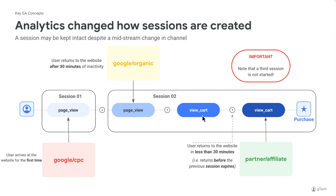Now they have a page view, they view their cart, and then they go out to another website and pick up some sort of partner or affiliate UTMs, likely via a coupon code. They then return to the site to view their cart and complete the purchase. Note that going out to another website and picking up new UTMs does not automatically start a third session, so their session scoped dimensions will not change from Google organic, but their event scope dimension for the purchase will update and become partner affiliate.